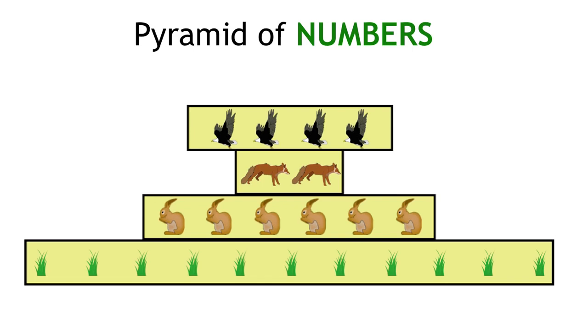As you can see in this example, thousands of blades of grass are eaten by lots of rabbits. That then feeds very few foxes. These foxes will then feed a larger number of eagles. The more organisms there are, the wider the bar is.